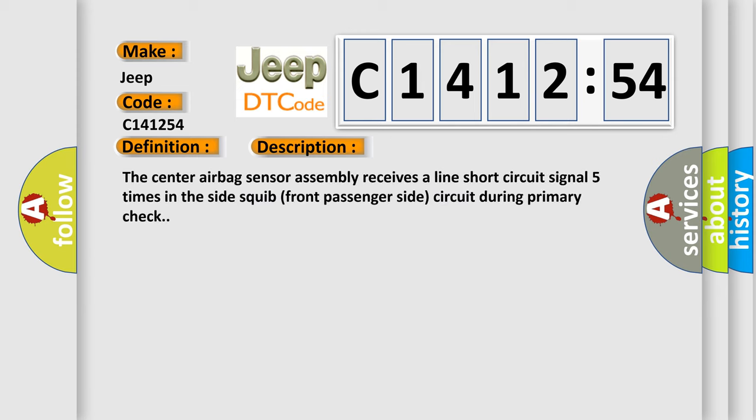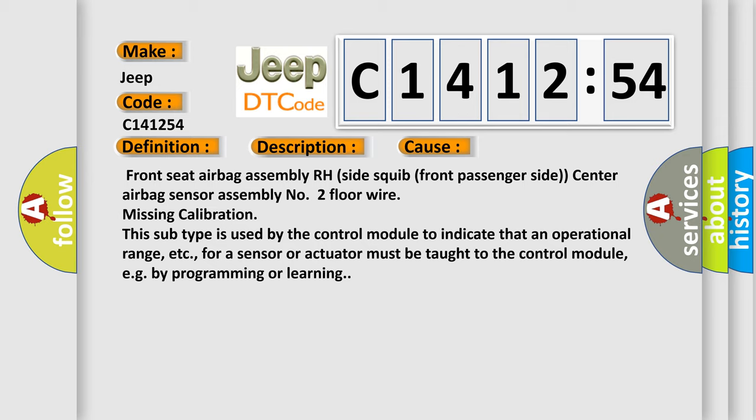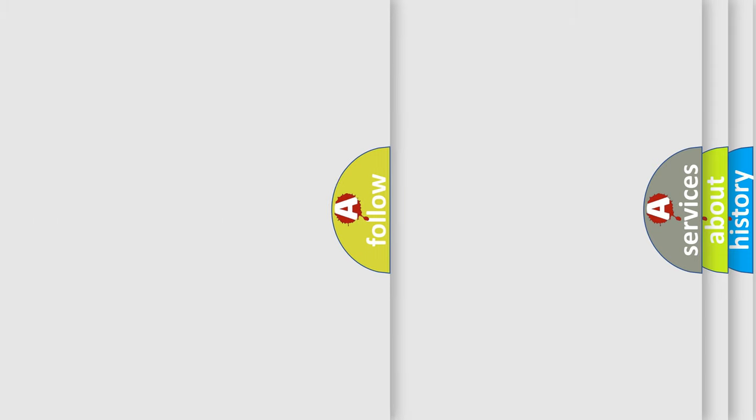And now this is a short description of this DTC code. The center airbag sensor assembly receives a line short circuit signal five times in the side squib front passenger side circuit during primary check. This diagnostic error occurs most often in these cases: front seat airbag assembly RH side squib front passenger side, center airbag sensor assembly number two floor wire, missing calibration. This subtype is used by the control module to indicate that an operational range for a sensor or actuator must be taught to the control module, e.g., by programming or learning.